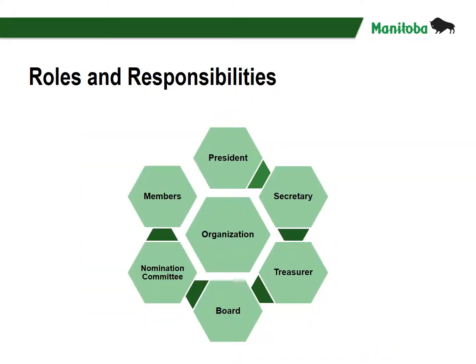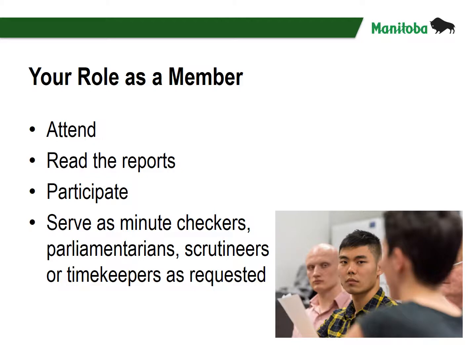All the members of the organization and the Board, as well as the officers, have a role in the Annual General Meeting. Your Role as a Member: Attend — plan on attending the AGM, or if possible, send a proxy if this is allowed. Read the Reports — be knowledgeable about the activities of the organization and be prepared to vote on resolutions or take part in discussion. Participate — be involved in the meeting and discussion, and follow the meeting's rules of order. Serve as Minute Checkers, Parliamentarians, Scrutineers, or Timekeepers as requested.